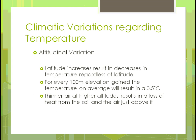For altitudinal variation, as altitude increases, decreases in temperature will happen regardless of latitude. For every 100 meters of elevation gained, the temperature on average will decrease by half a degree centigrade. The air is thinner at higher altitude, which results in a loss of heat because heat bounces off and escapes more quickly due to the thinner atmosphere.